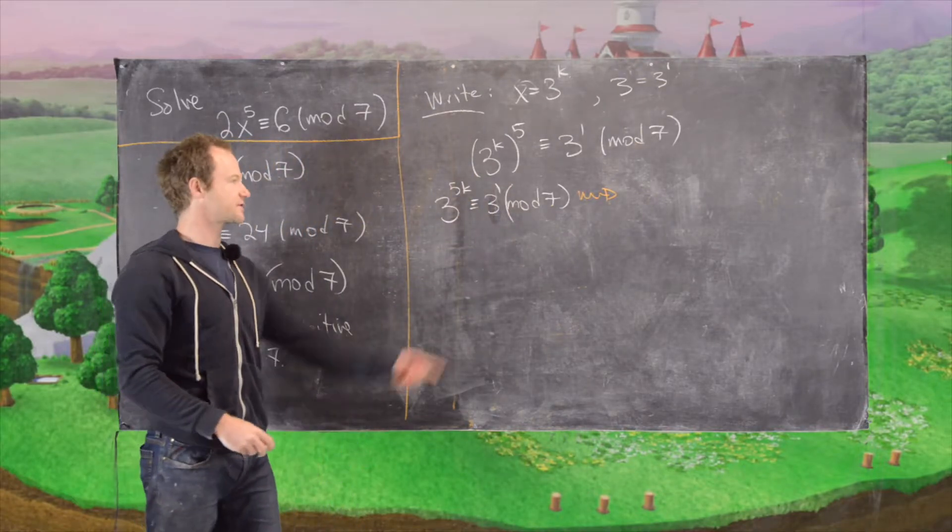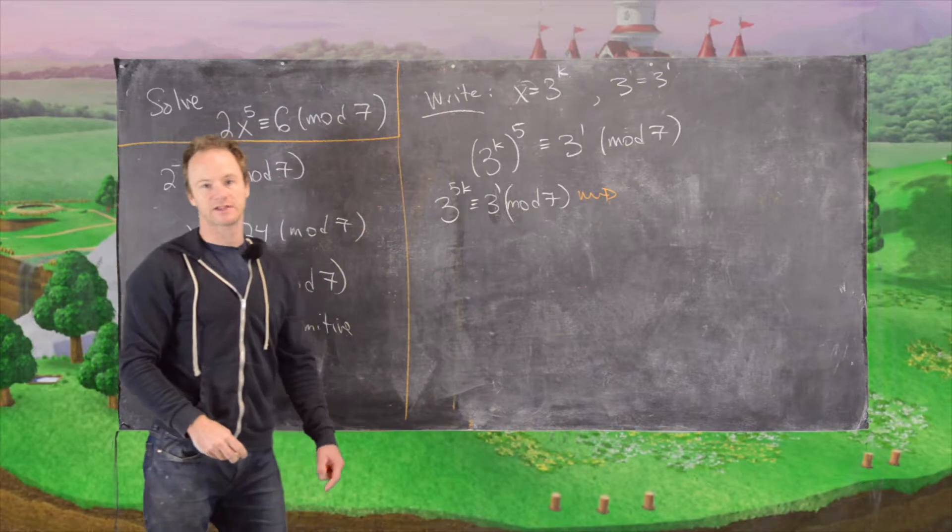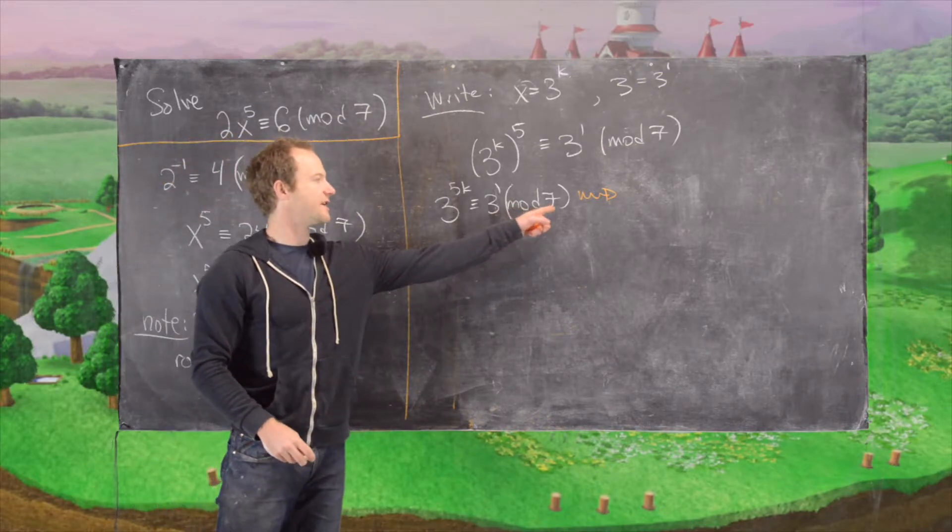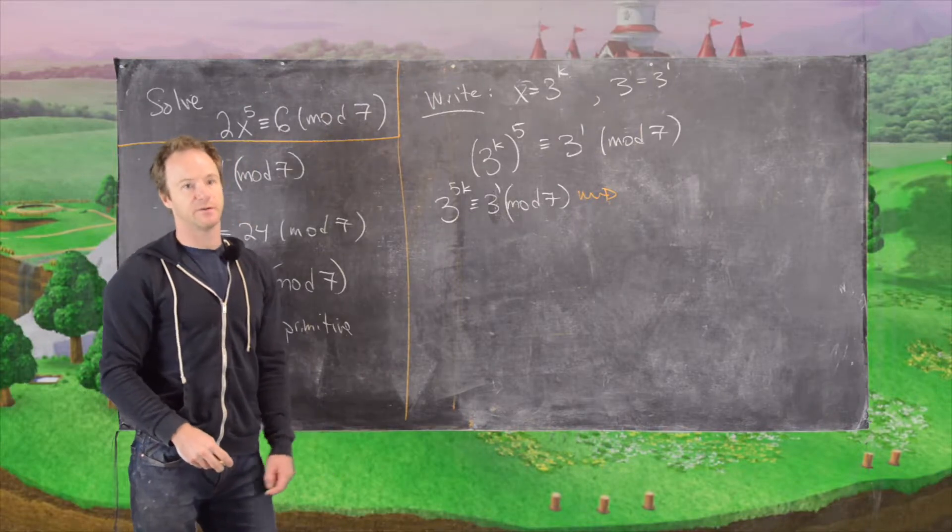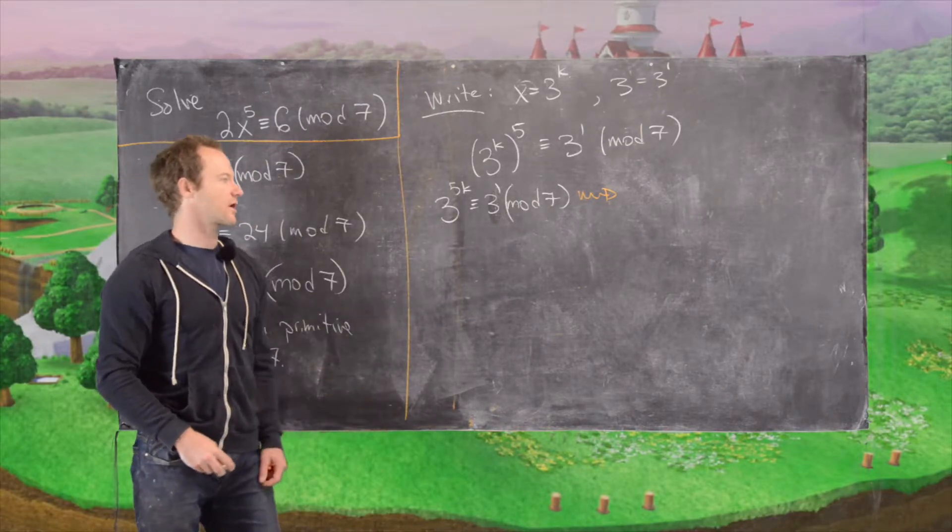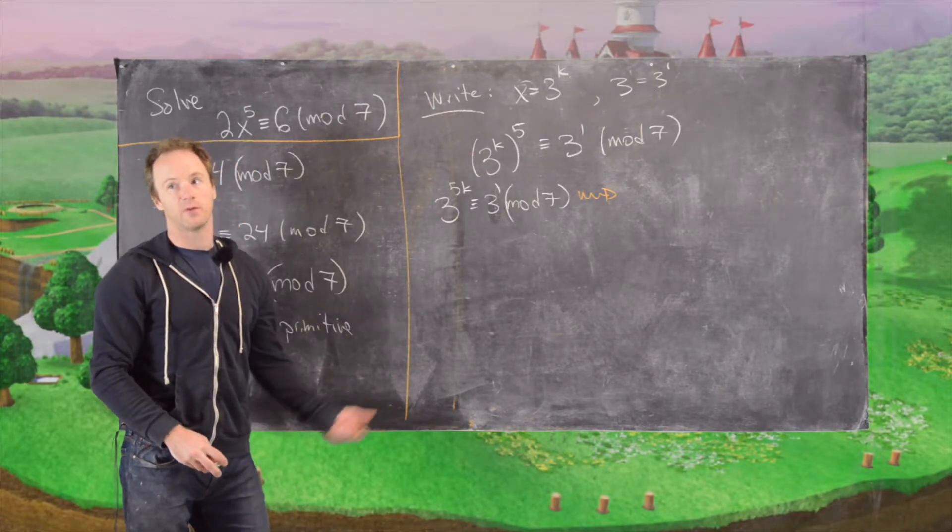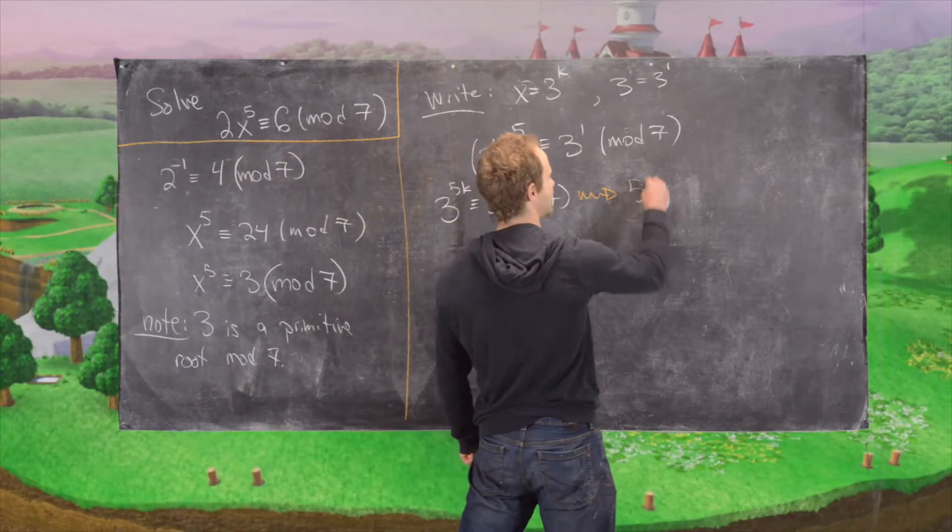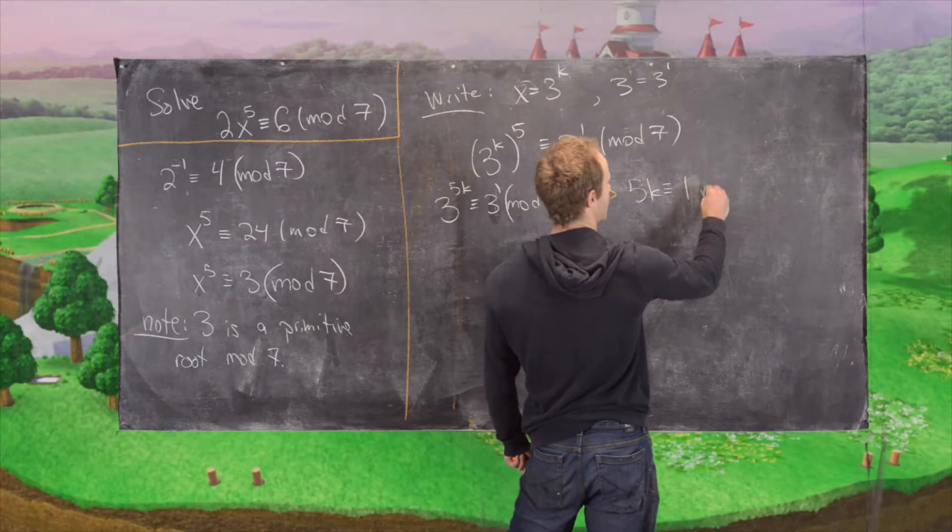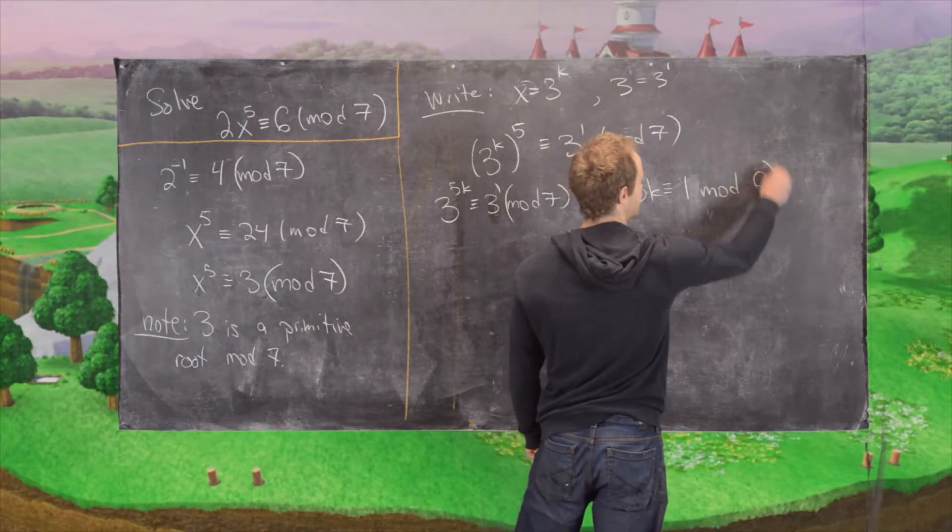And now using a previous result, we know that the exponents will be congruent mod phi of 7. So actually, they'll be congruent mod the order of 3, but that will be phi of 7 because it's a primitive root. So that tells us that 5k is congruent to 1 mod 6.